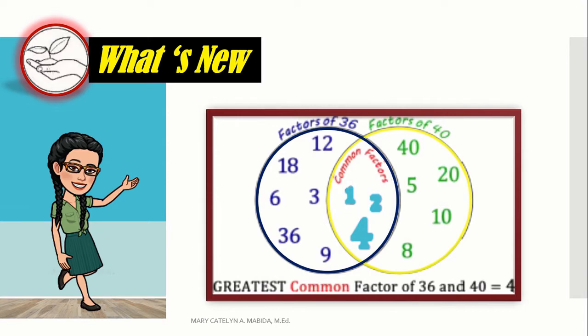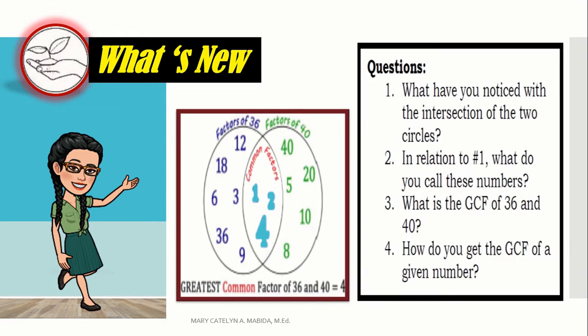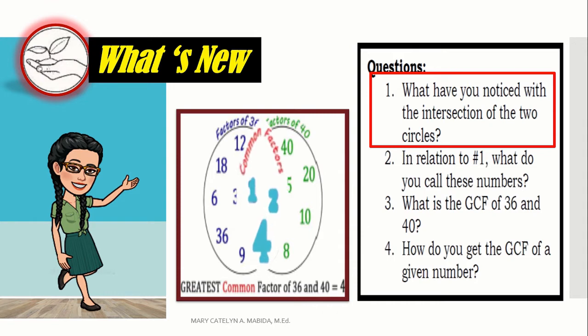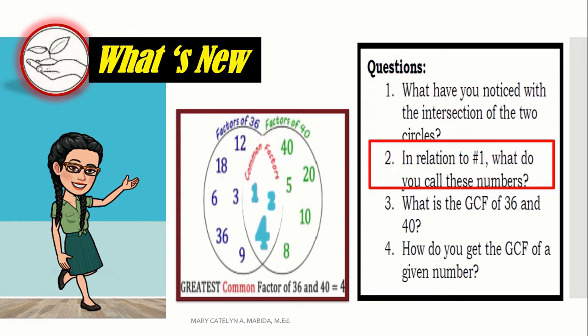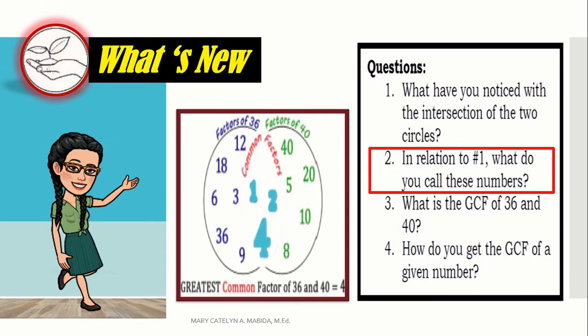Now, we have some guide questions for you. Number 1. What have you got with the intersection of the two circles? That is right. These numbers are both factors of 36 and 40. Number 2. In relation to number 1, what do you call these numbers? You are good. They are called common factors.